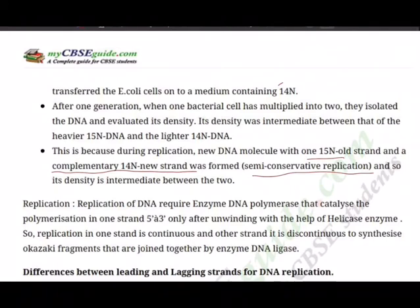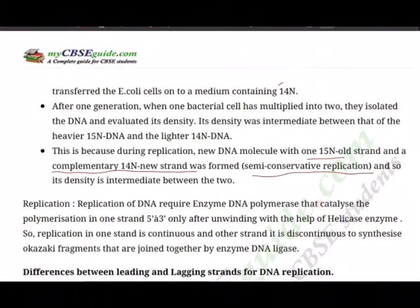Replication of DNA requires the enzyme DNA polymerase, which catalyzes polymerization in one direction only — 5' to 3'. Unwinding of the double helix is done by the enzyme helicase. Replication on one strand is continuous, while on the other strand it is discontinuous, synthesizing Okazaki fragments — named after the scientist Okazaki who discovered them. These fragments are joined together by the enzyme DNA ligase.